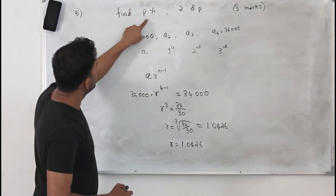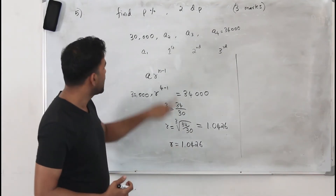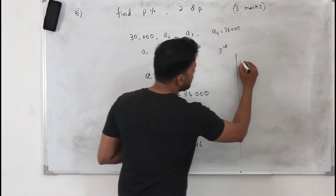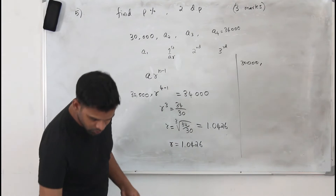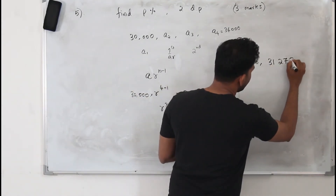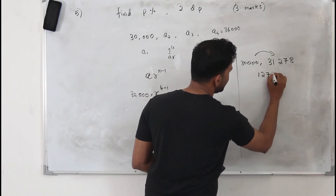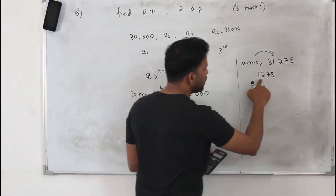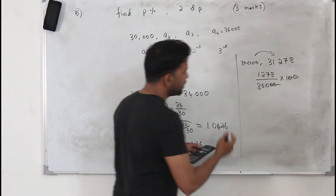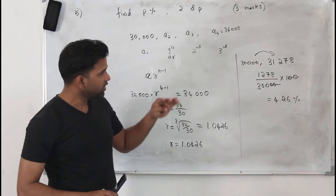They want you to find the percentage increase every year. There are two ways to find it. Method one: use the common ratio and multiply by the first term — A·R gives the second term. So 30,000 × 1.0426 = 31,278. Compare the first term and second term: the increase is 1,278. To find the percentage increase: 1,278 divided by 30,000, times 100 = 4.26%. That is one method.